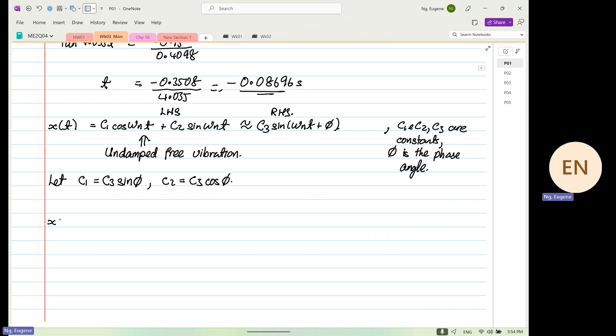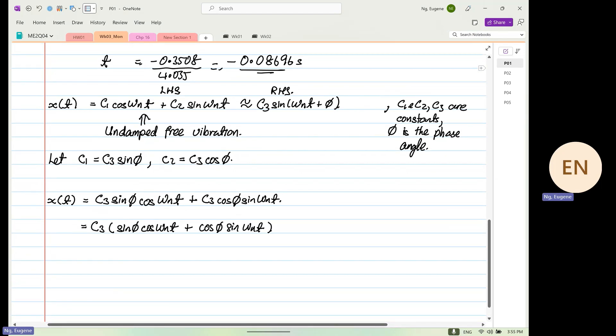So we are going to let C1 is equal to C3 sine φ, and we are going to let C2 is equal to C3 cos φ. So from here, we are going to get C3 sine φ cos ωₙt plus by cos φ sine ωₙt. From here, you call this double-angle. Using the double-angle rule, this is equal to C3 sine (ωₙt + φ).